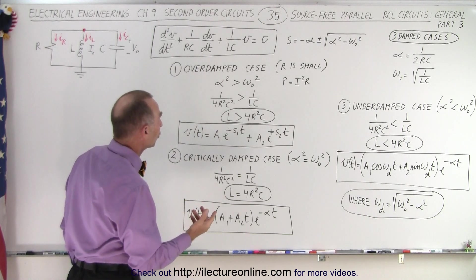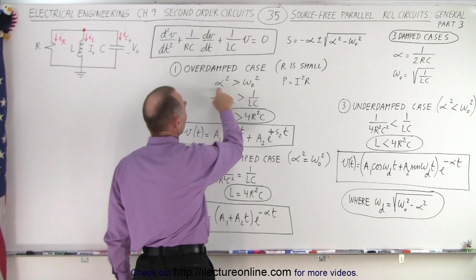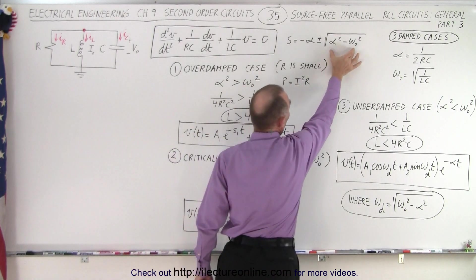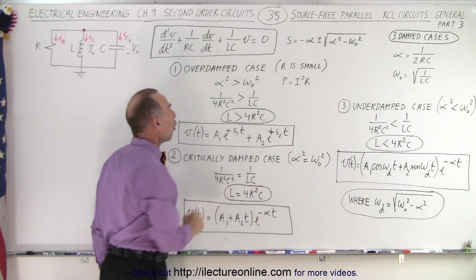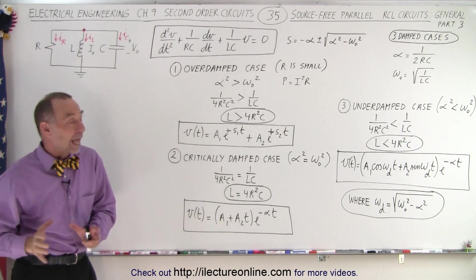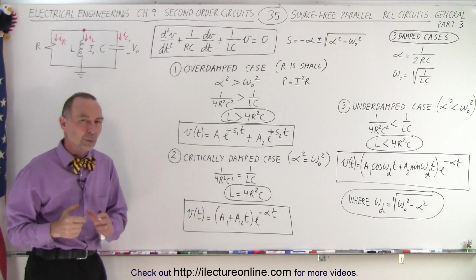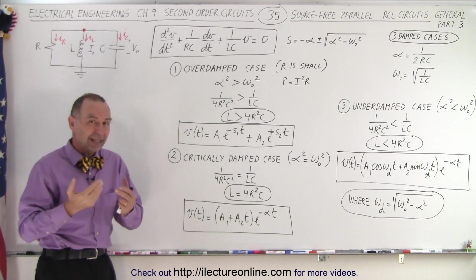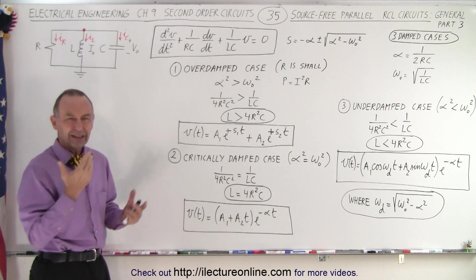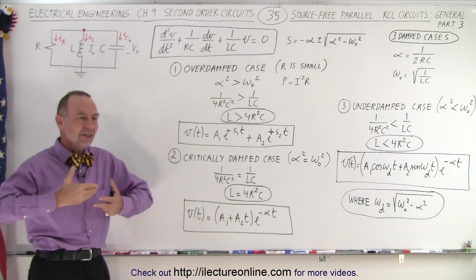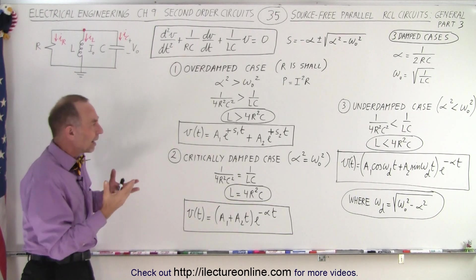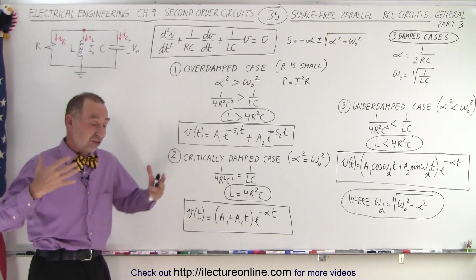The first solution, when alpha squared is larger than omega sub-naught squared, so that this is a positive number, is called the overdamped case. That will happen when R is small, when the resistor placed in the circuit is small. Now you may wonder, well, that seems odd, because isn't the damping factor caused by a large resistor?